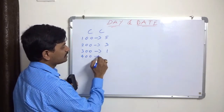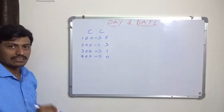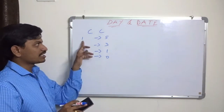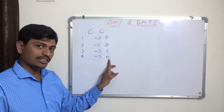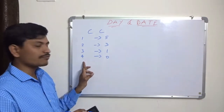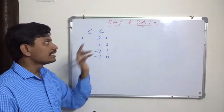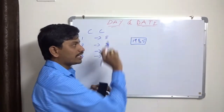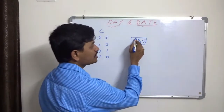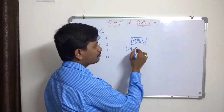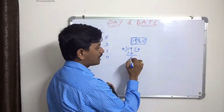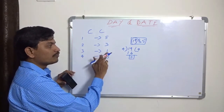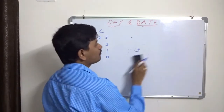For every 100 years: 5 odd days. For every 200 years: 3 odd days. For every 300 years: 1 odd day. For every 400 years: 0 odd days. We have to remember these century codes. So instead of remembering 100, 200, 300, 400 years, we take only 1, 2, 3, 4 centuries — with codes 5, 3, 1, 0 respectively.